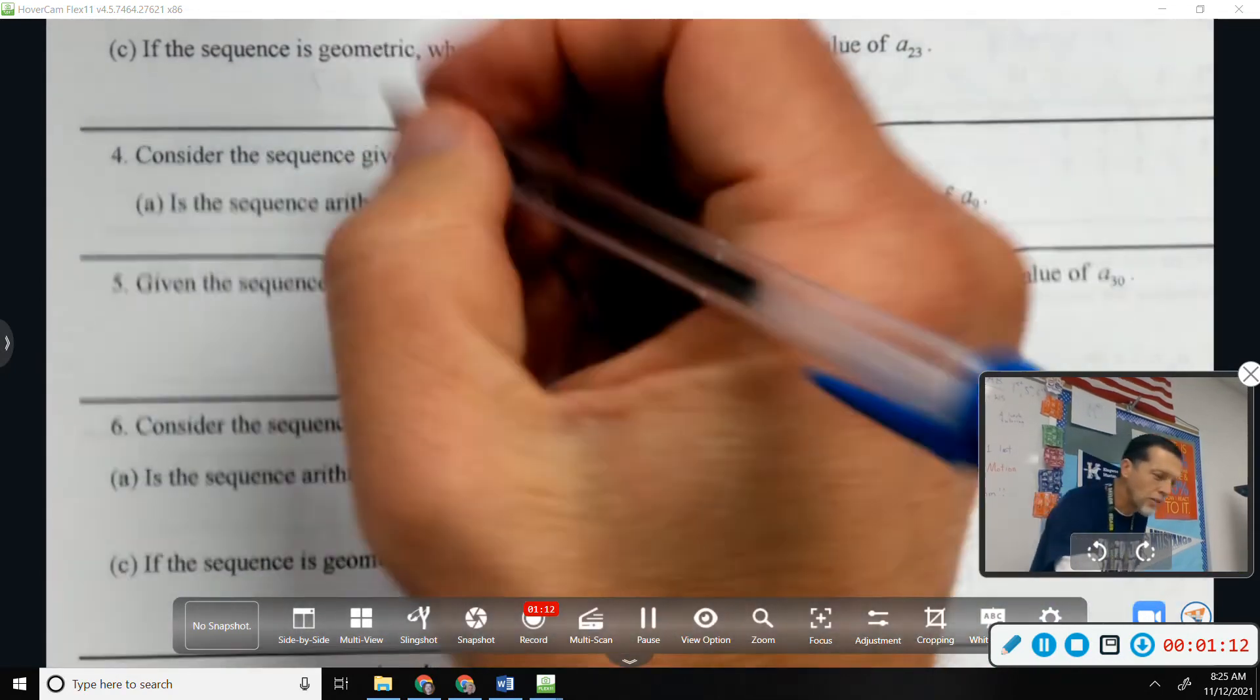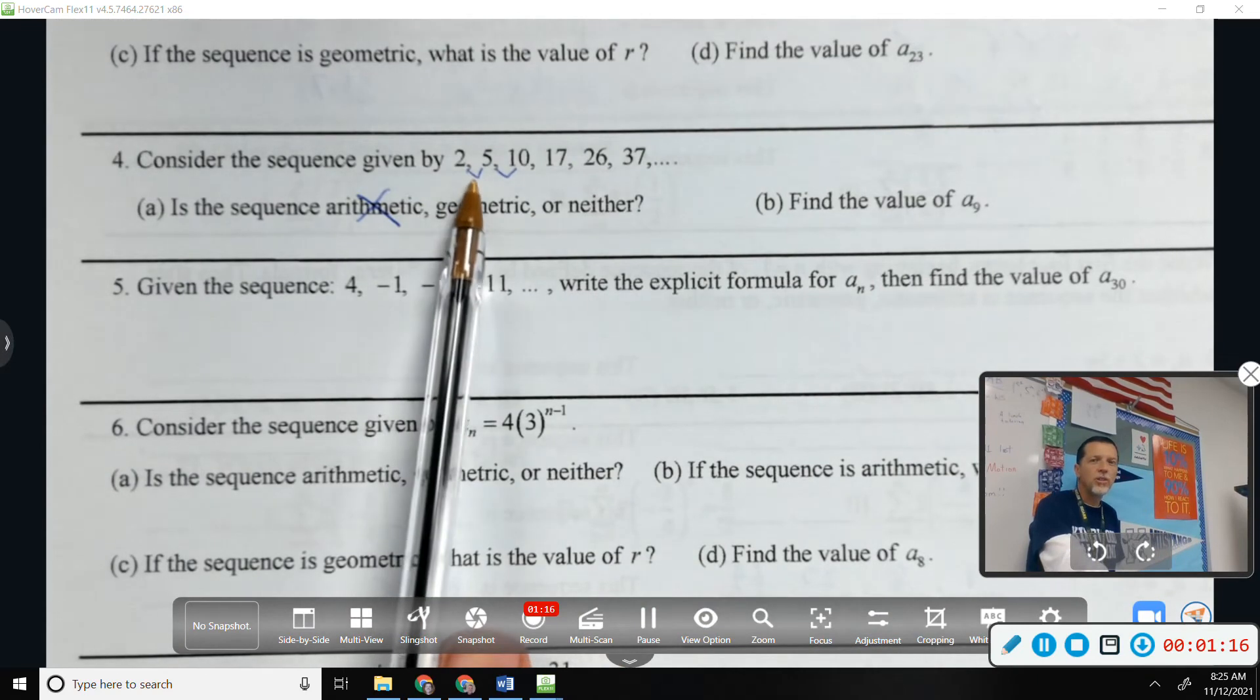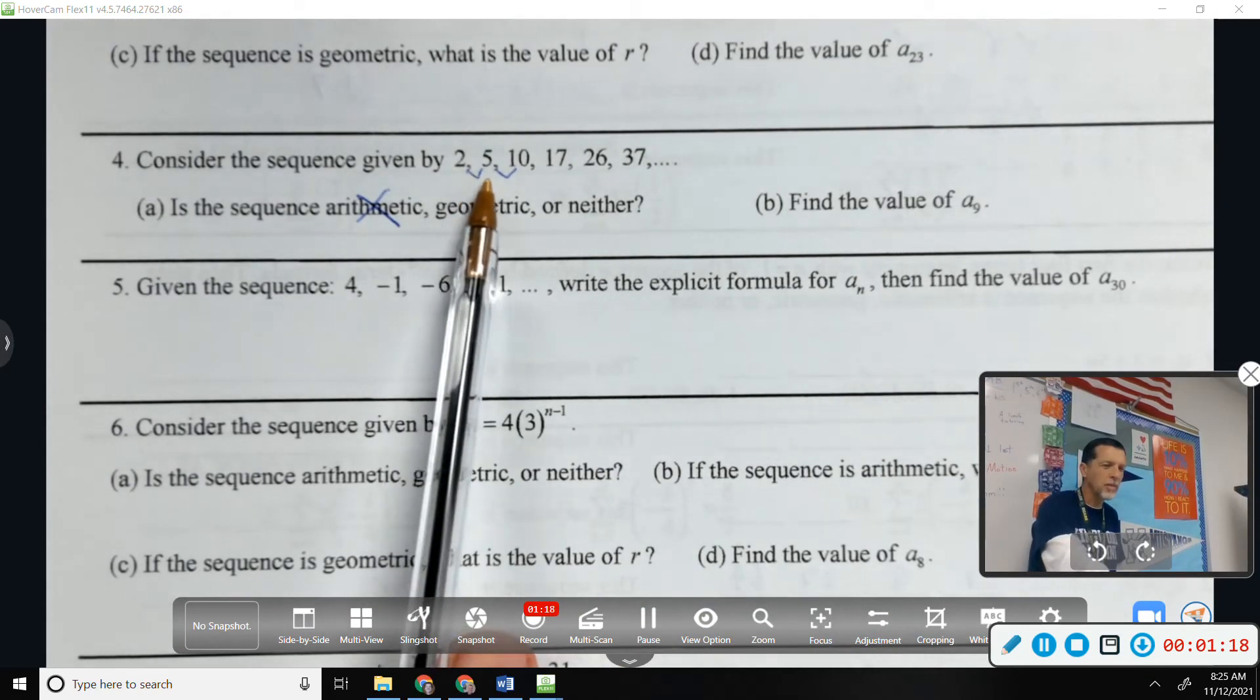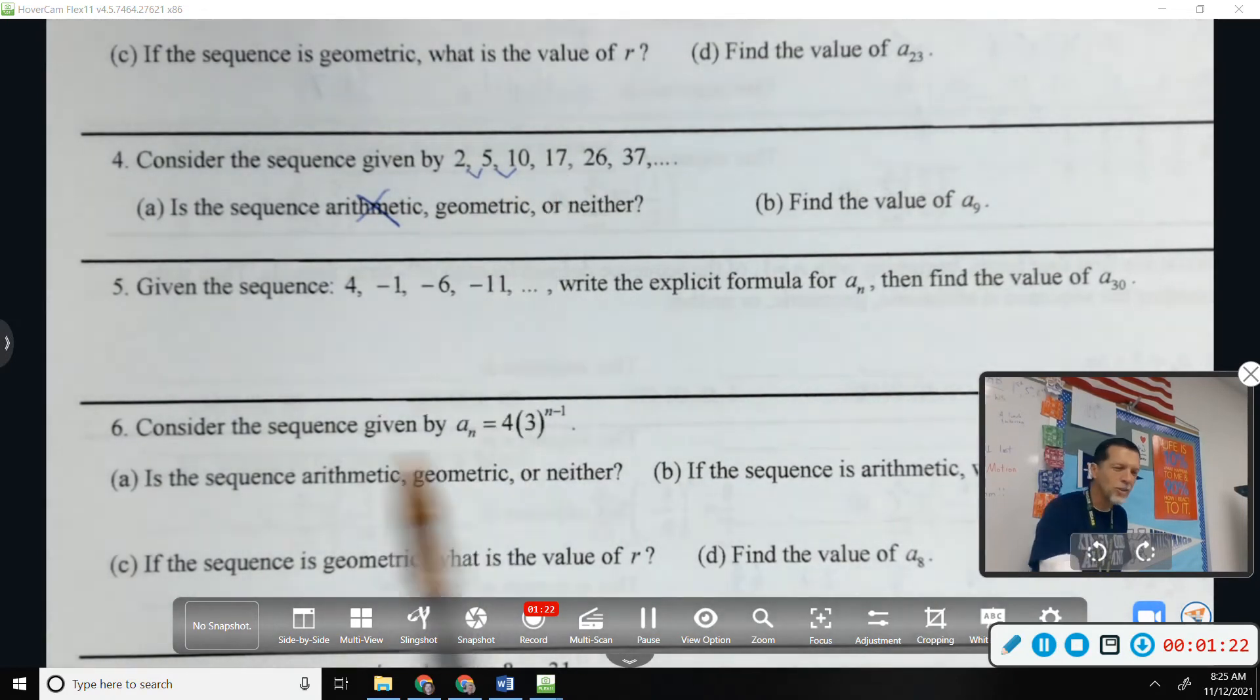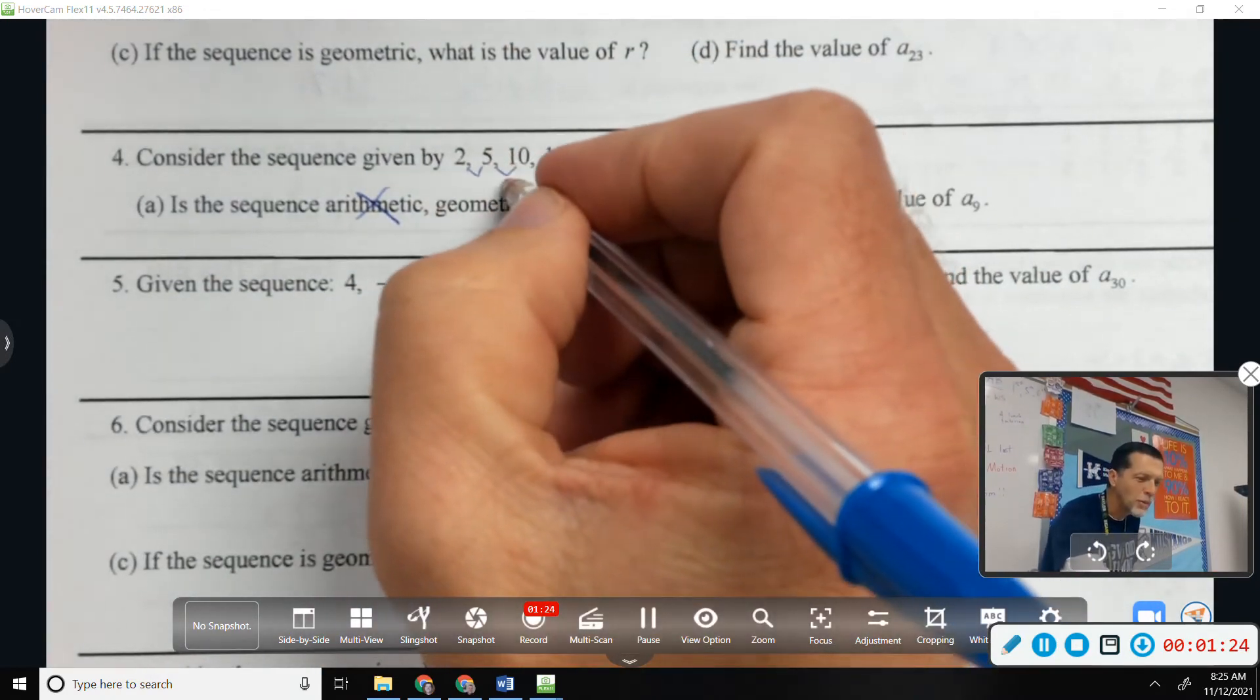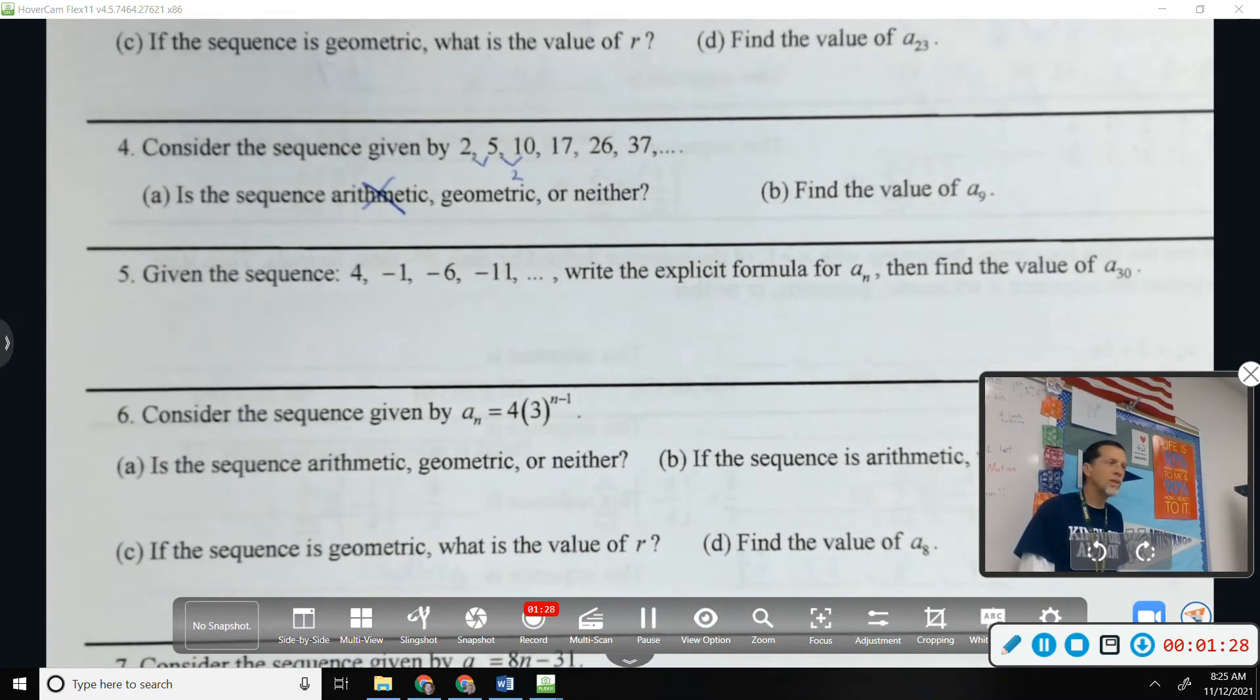So it's not arithmetic, for sure. Geometric would mean we're multiplying by something. Well, I don't know exactly what all those multipliers are, but from five to ten we'd be multiplying by two. And none of those others were multiplying by two. So it's not geometric.